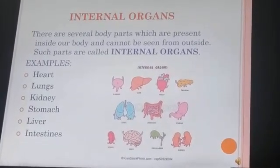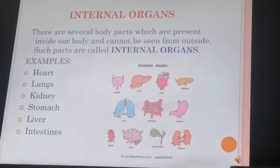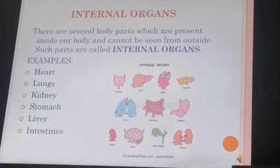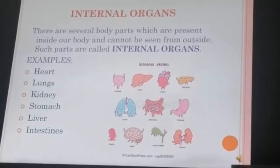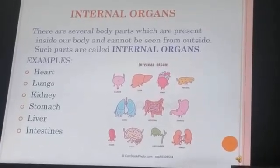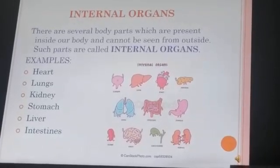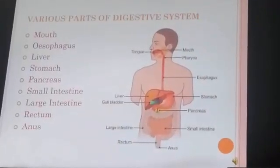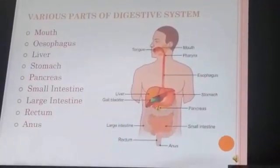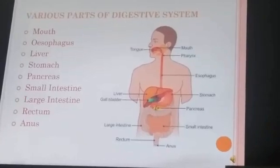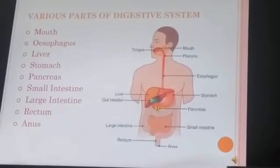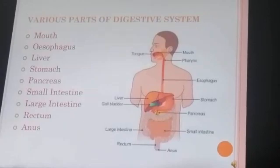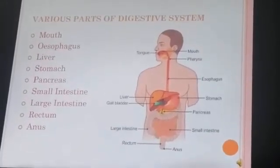Our body works like a machine. Different body organs perform different functions. When some body organs together perform a function for the body, they make a system. In this chapter, we will study about the digestive system.